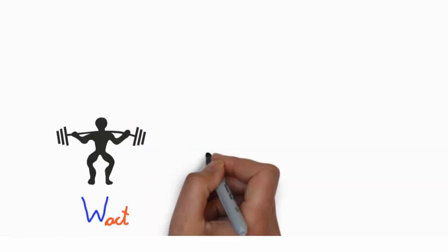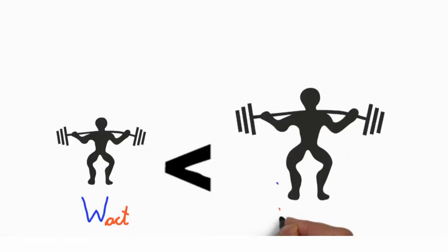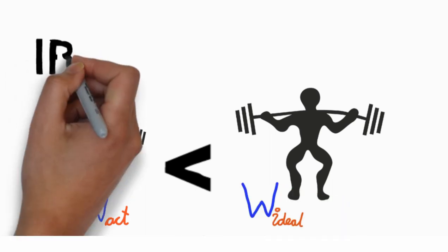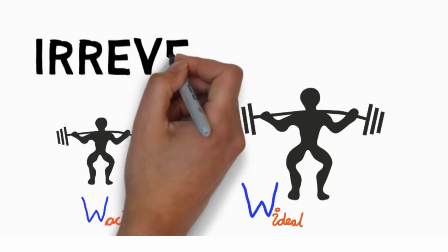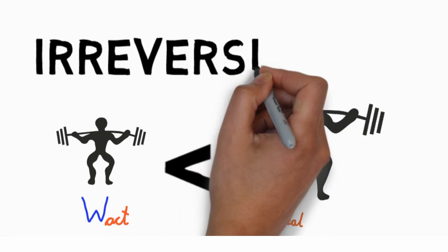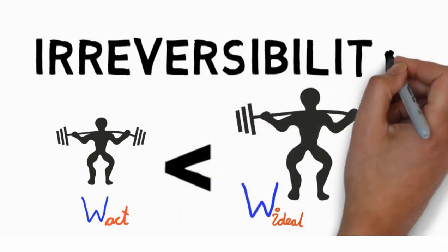The actual work done by the system is always less than the idealized reversible work. The difference between these two quantities, that is the ideal work and the actual work of the system, is called irreversibility. It is often referred to as degradation or dissipation.